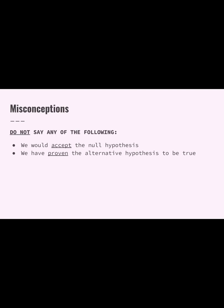Some common misconceptions and language to avoid: we do not say that we accept the null — we never accept the null, we only reject it or fail to reject it. We also never say that we have proven the alternative hypothesis to be true. You should never say the alternative hypothesis is correct or that your experiment has proven it. All we can do is support or accept the alternative hypothesis; we never say we've proven it.